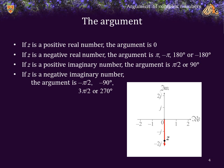If the complex number z is a negative imaginary number, the argument is either -π/2, or -90°, or if you want to go from the other direction, 3π/2, or 270°.